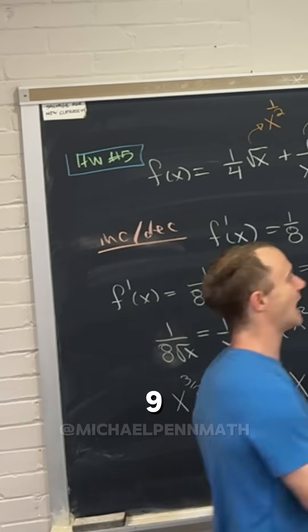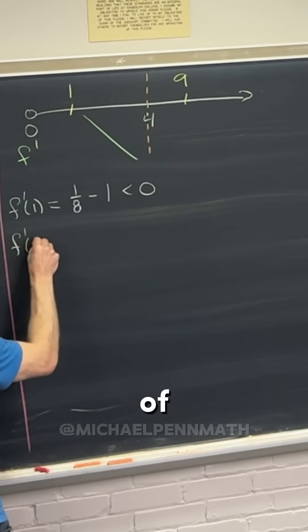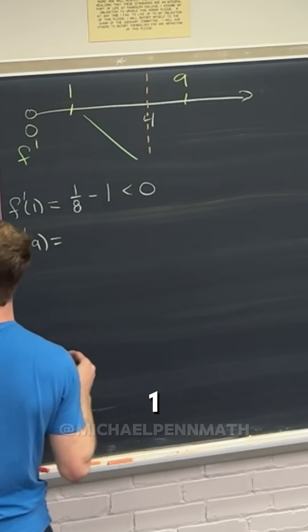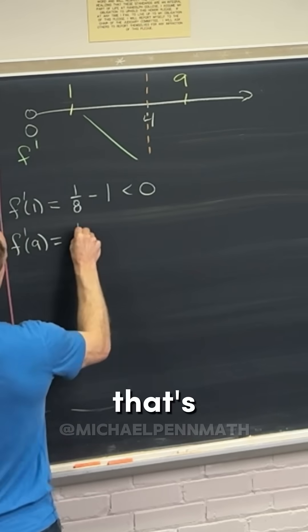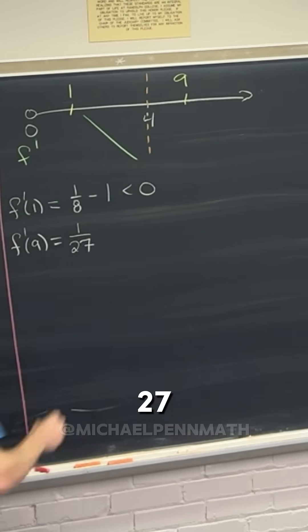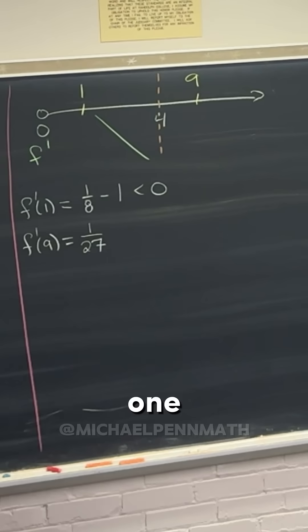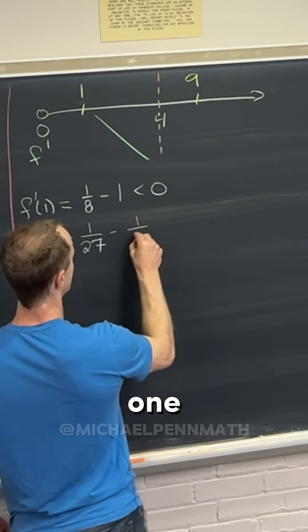And then, what happens if you plug in 9? Let's see, f prime of 9. That's going to be 1 over 8 times the square root of 9. That's 1 over 27, and then minus 1 over 9 squared, so that's minus 1 over 81.